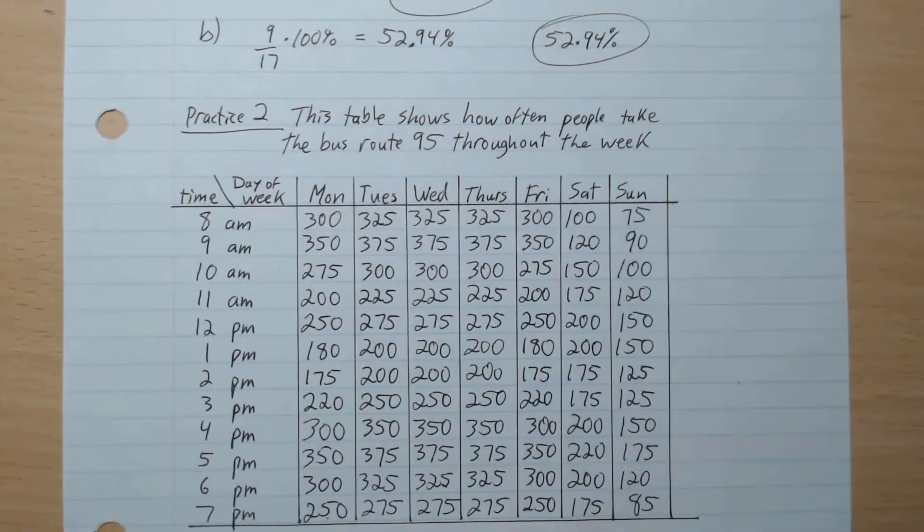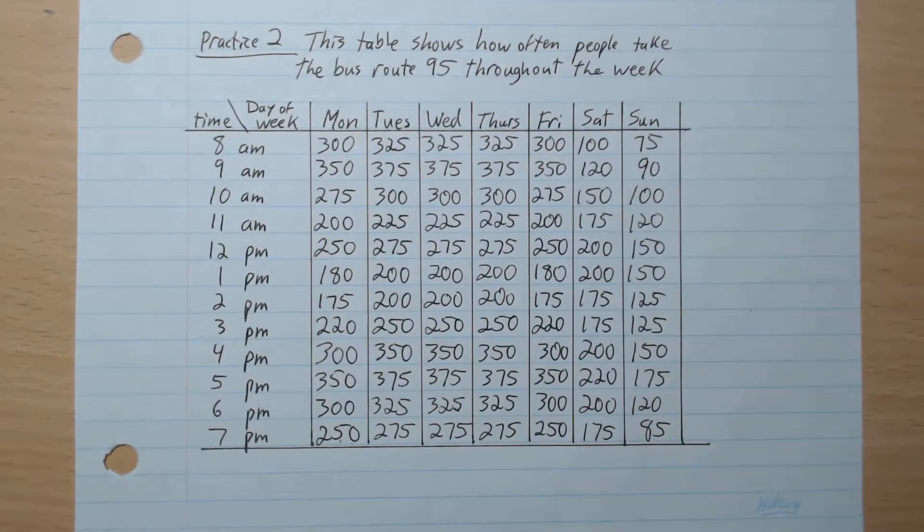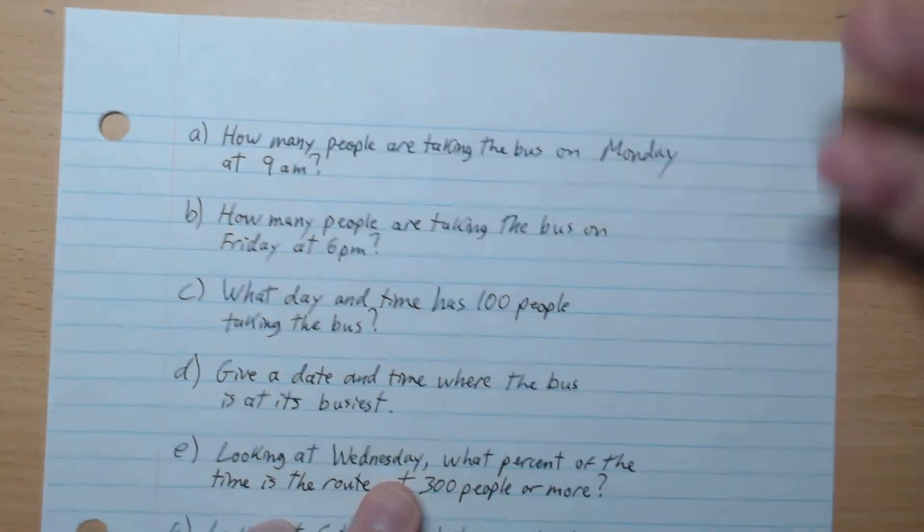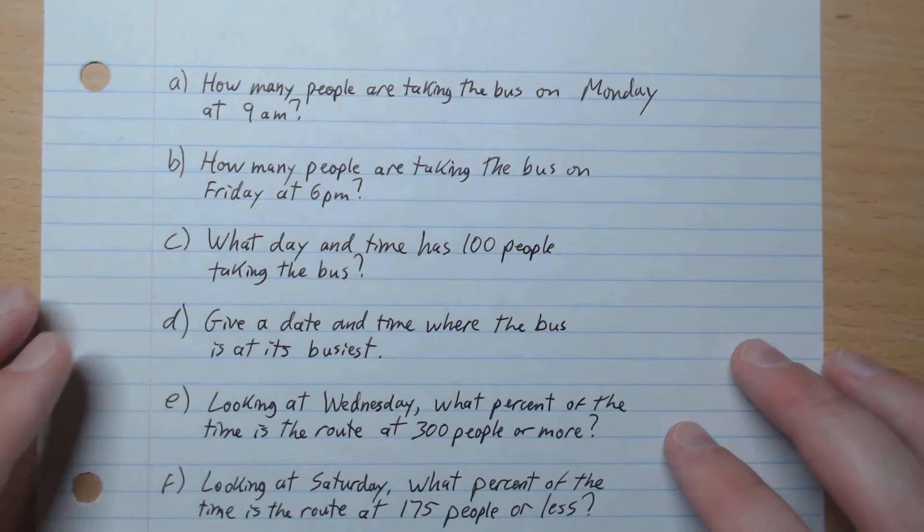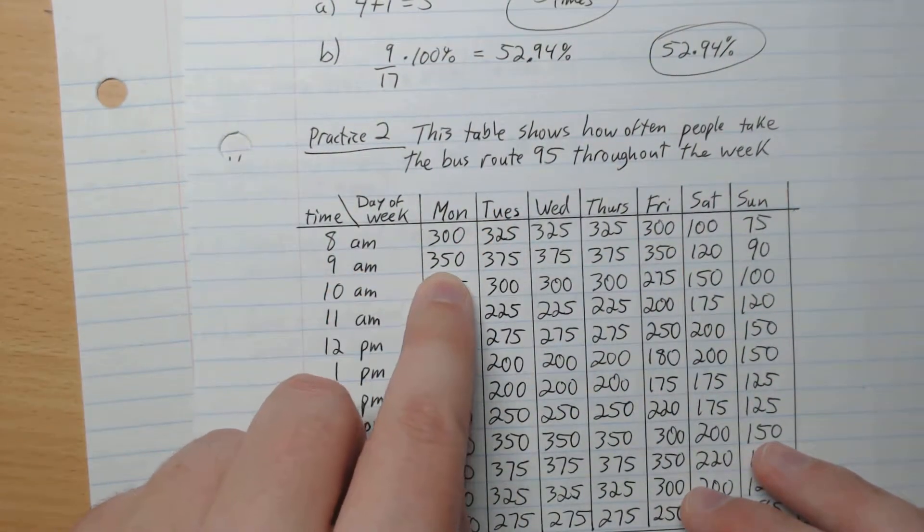Okay, so those are the questions. And again, this is the table. Okay, so A, how many people are taking the bus on Monday at 9am? So we look at here, Monday, 9am, 350.